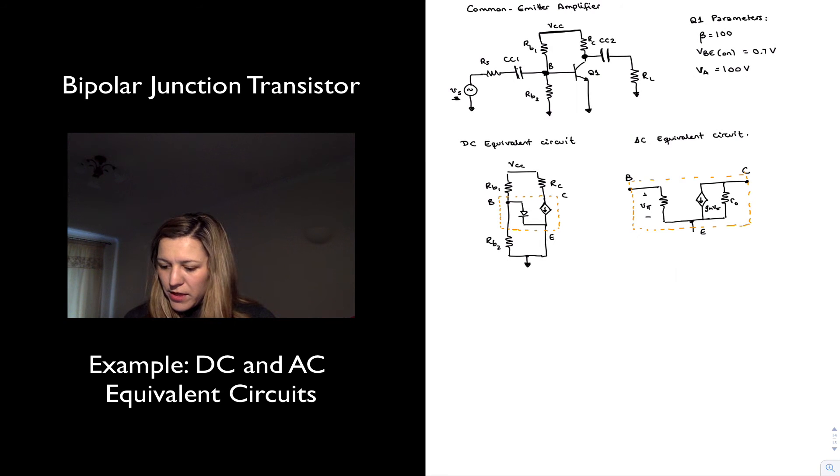So for one thing, I have connected to the base of my transistor, I have RB1 and RB2. RB2 is connected to ground. RB1 is connected to VCC, which is an AC ground, right?